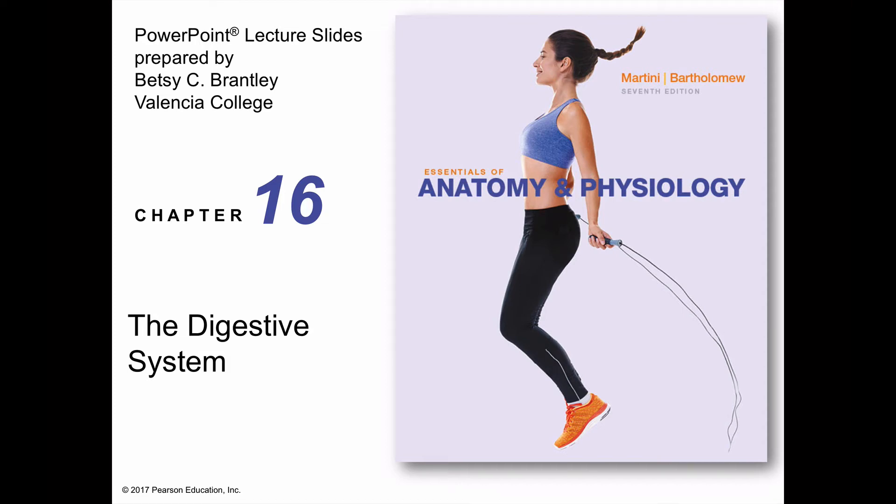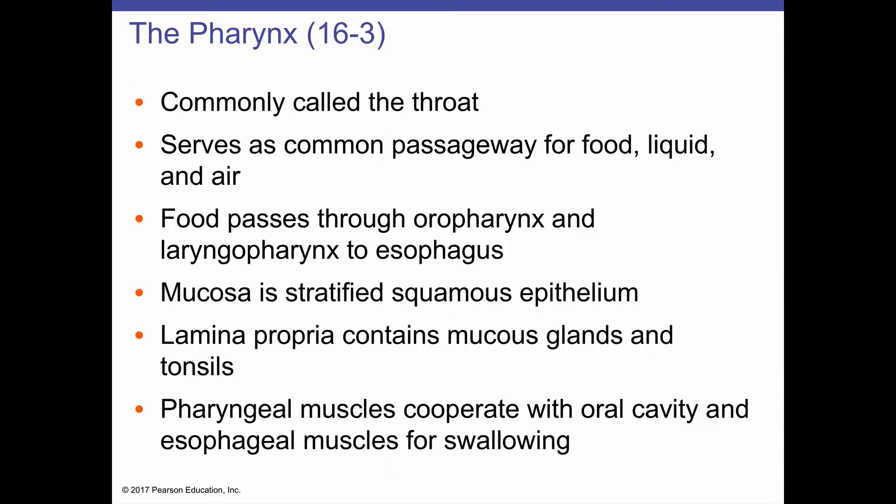Welcome back. This is chapter 16.3 of the digestive system, focusing on the pharynx, commonly called the throat. The pharynx serves as a common passageway for food, liquid, and air. We covered the anatomy and histology of the pharynx in chapter 15 on the respiratory system. The pharynx is divided into three portions: the nasopharynx at the posterior end of the nasal cavity, the oral pharynx at the posterior side of the oral cavity, and the laryngopharynx, which is the distal portion. We are mostly concerned with the oral pharynx and laryngopharynx, because those are the only portions that food should pass through.